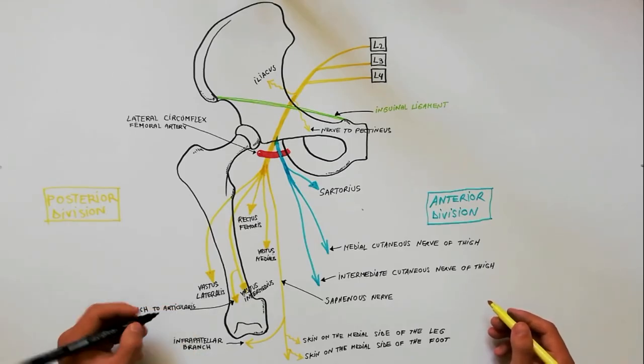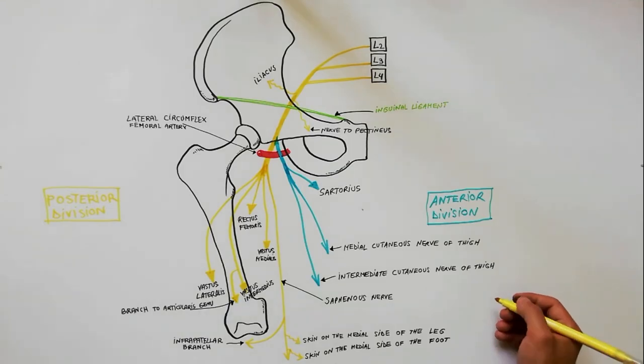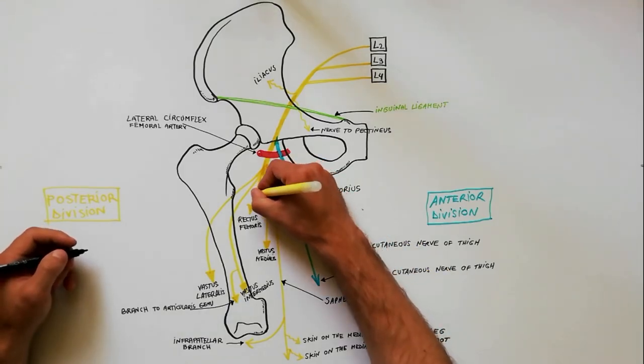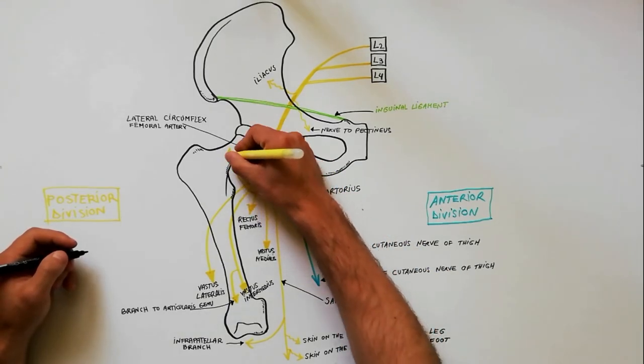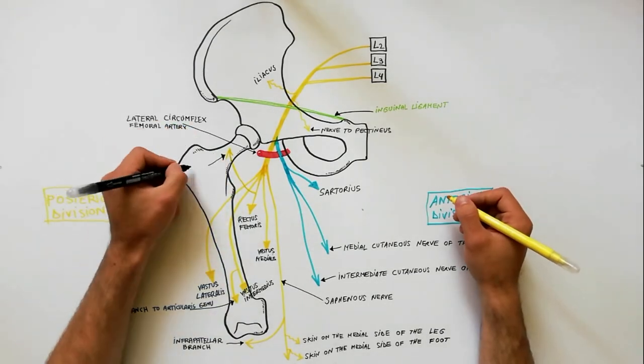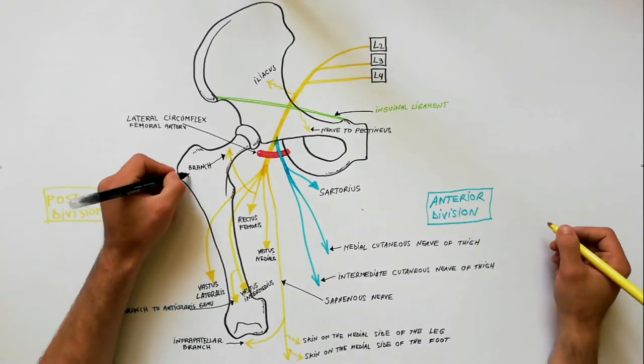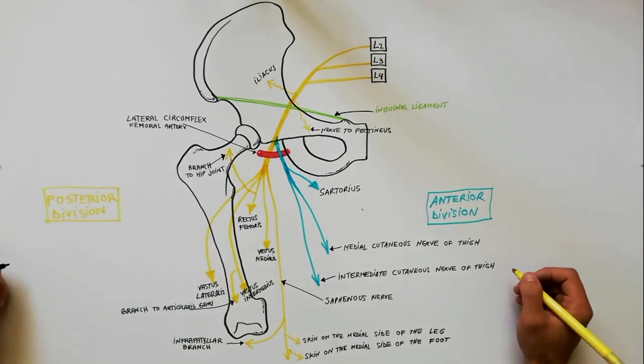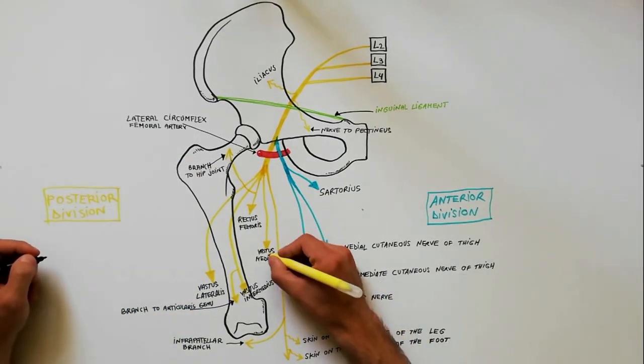From the posterior division, we also have articular branches. Hip joint is supplied by the nerve to rectus femoris. Knee joint is supplied by the nerves to the three vasti.